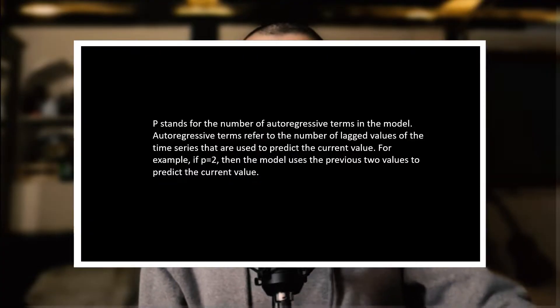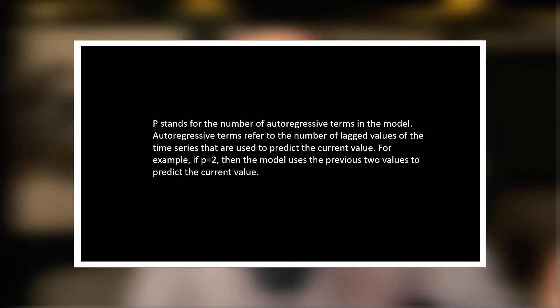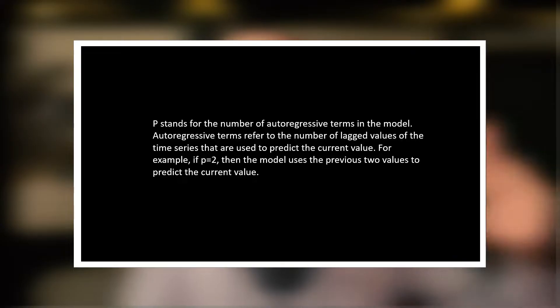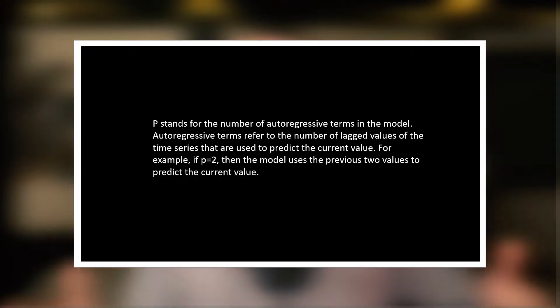Now let's talk about the three parameters of ARIMA: the P, D, and Q values. P stands for the number of autoregressive terms in a model — these refer to the number of lagged values of the time series used to predict the current value. For example, if P equals two, then the model uses two previous values to predict the current value.